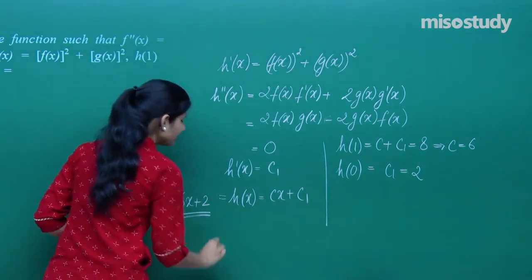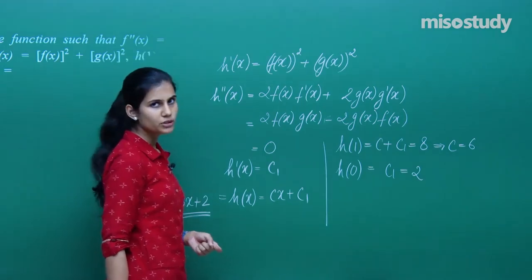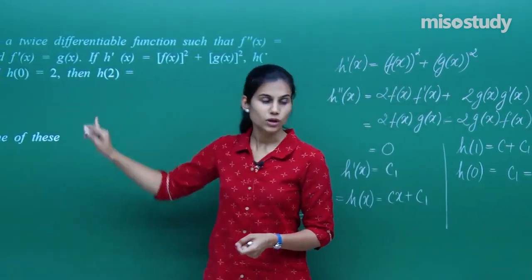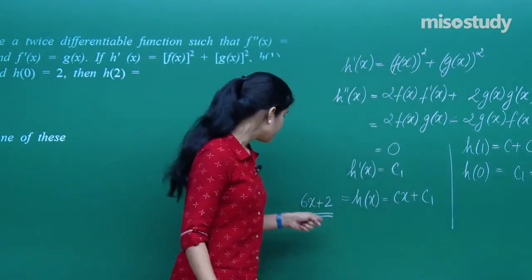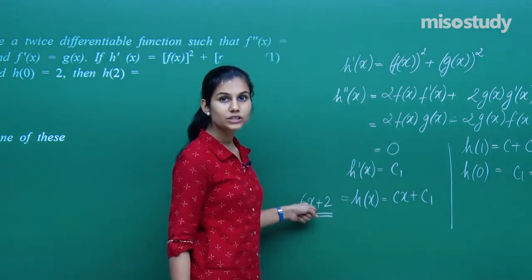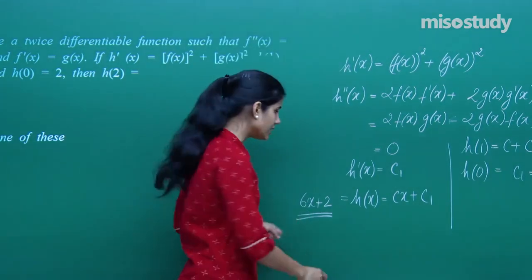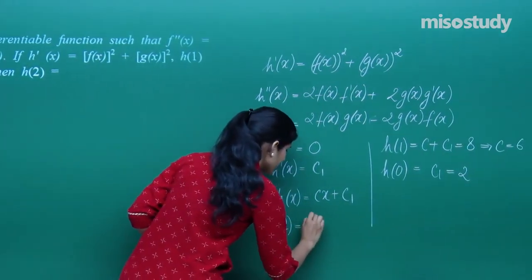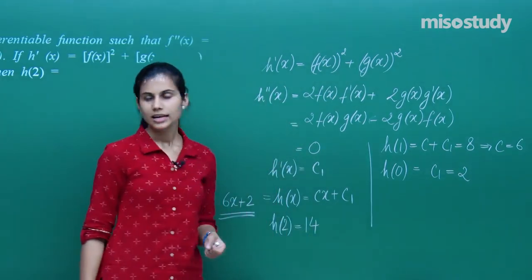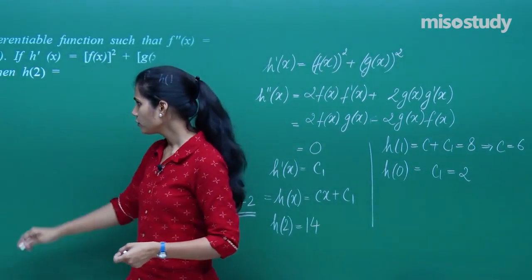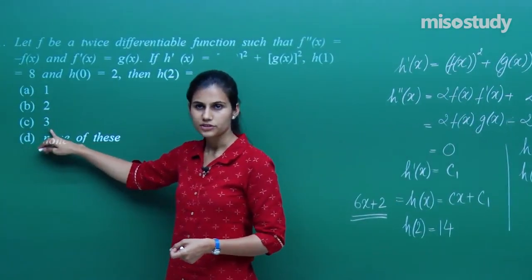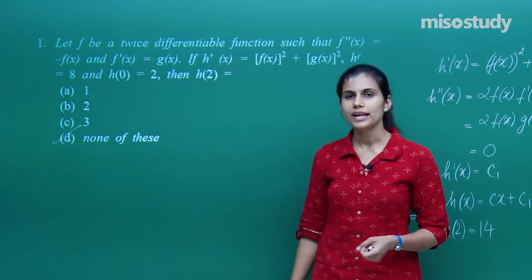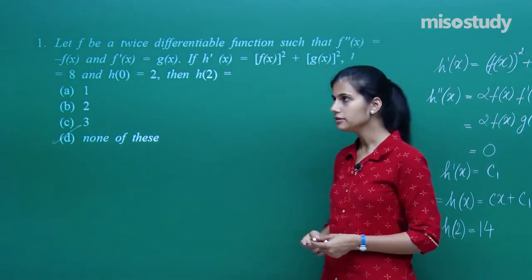So h(x) = 6x + 2. The moment you have your function h, compute h(2): substituting x = 2 gives 14. h(2) = 14, and that 14 is not in the first three options, so clearly none of those is the answer.